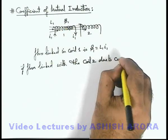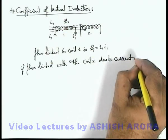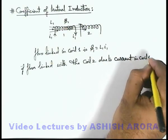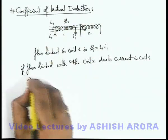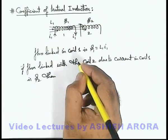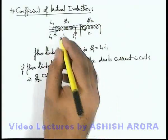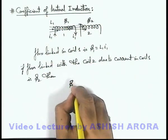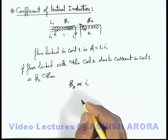due to current in coil 1 is phi2, this is the flux phi2 which is linked with the second coil due to the current in first coil which is i1. Then we can write phi2 is directly proportional to i1.